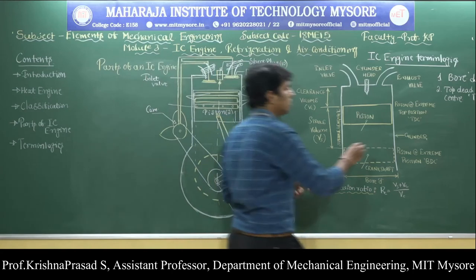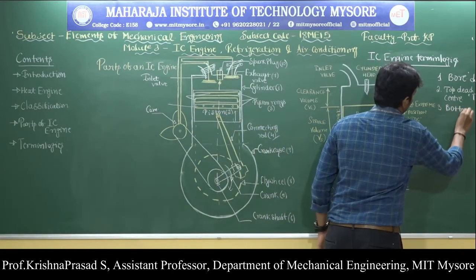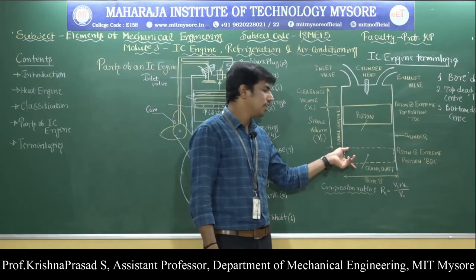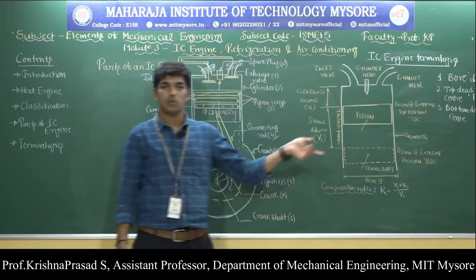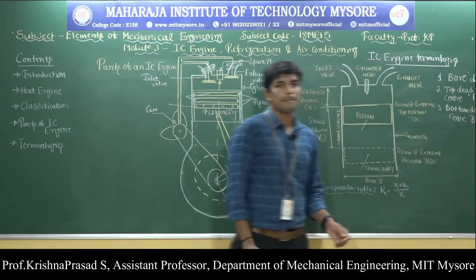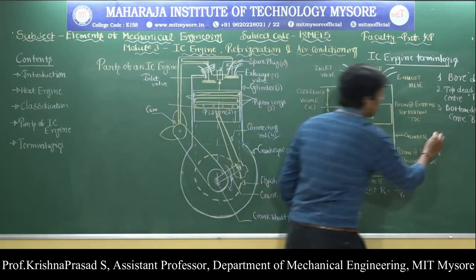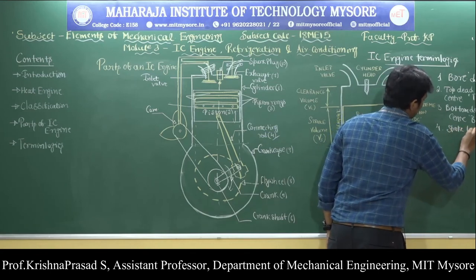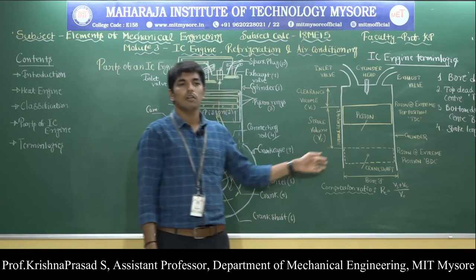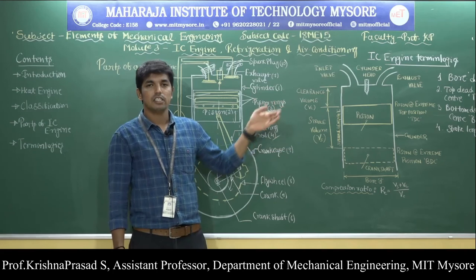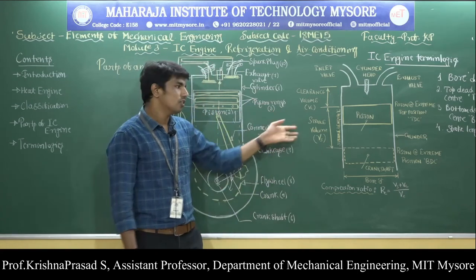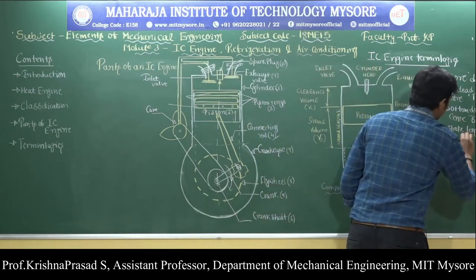The third term is bottom dead center (BDC). BDC is the extreme position of the piston near the crankshaft, abbreviated as BDC. The fourth term is stroke length. Stroke length is the linear distance traveled by the piston when it moves from TDC to BDC — during suction stroke, compression stroke, power stroke, and exhaust stroke. It is denoted by capital L.